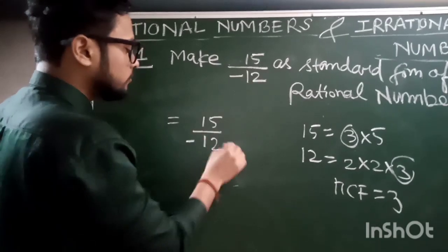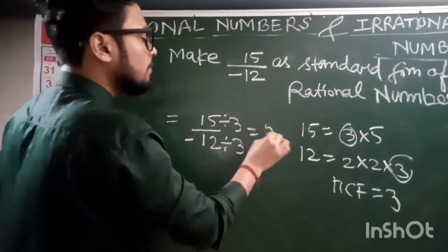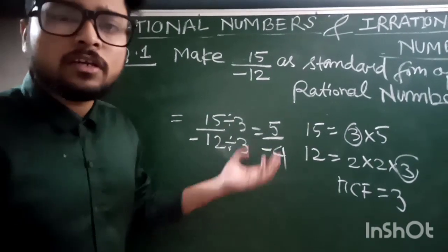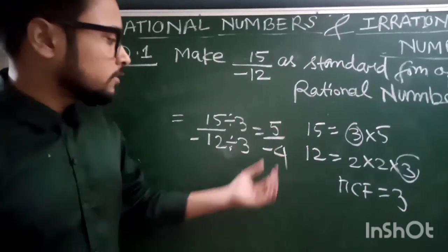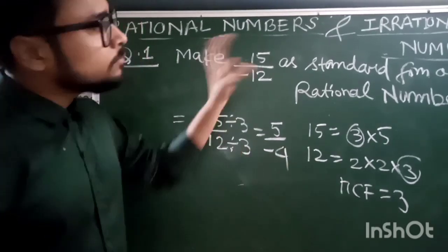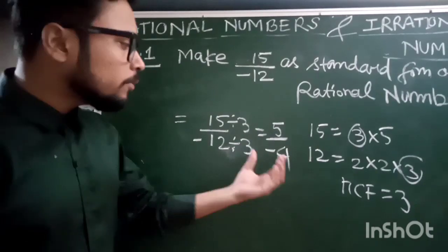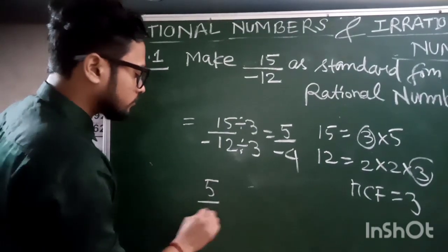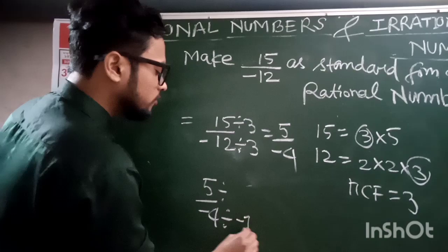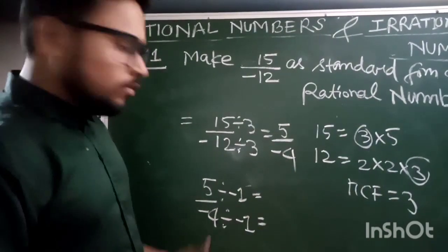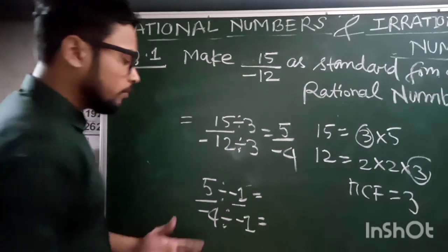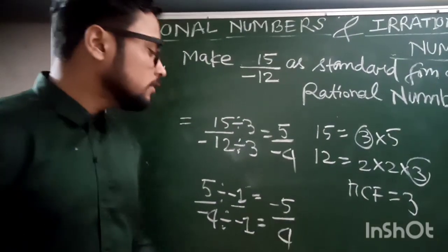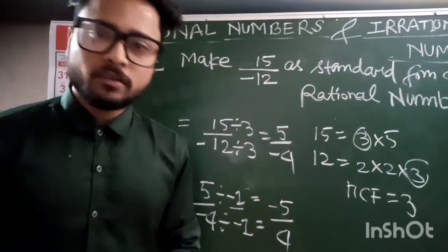We have 5 upon minus 4, but this is still not in standard form because the denominator is negative. As per our definition, the denominator should be a positive integer. So we divide both numerator and denominator by minus 1, giving us minus 5 upon 4. Now minus 5 upon 4 is the standard form of the rational number.